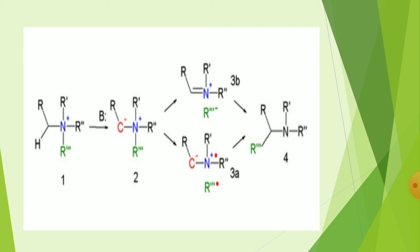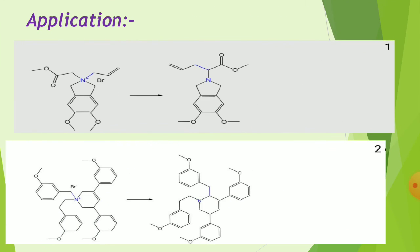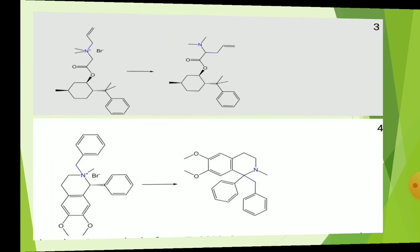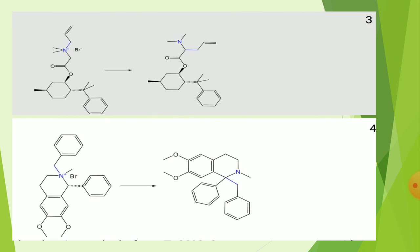Application: the quaternary ammonium salt gives amine formation via the Stevens Rearrangement. Similarly, a sulfonium salt gives sulfide formation via the same mechanism. In examples three and four, the quaternary ammonium salt undergoes amine formation — only one R group migrates from nitrogen to the adjacent carbon.